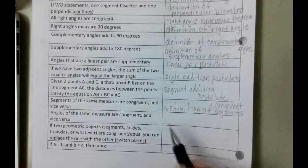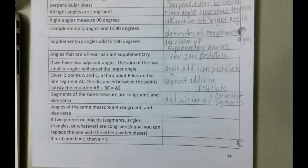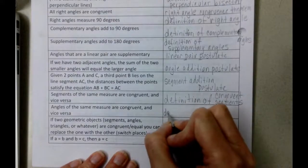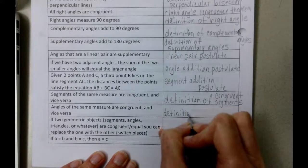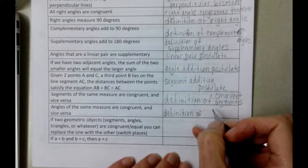Almost the same thing on this next one. Angles of the same measure are congruent and vice versa. Well this time it's going to be the definition of congruent angles.